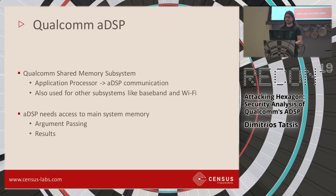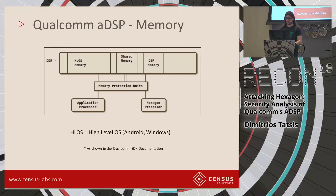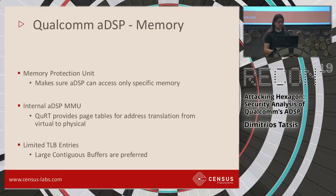The ADSP communicates with the rest of the system with something called the Qualcomm shared memory subsystem, and it's also used for baseband and Wi-Fi communication. The ADSP needs to have access to the main system memory in order to read the passed arguments and write the results back to the user. As shown in a diagram from Qualcomm documentation, the Hexagon processor is able to access the main system memory, but only through a memory protection unit, which limits what memory the ADSP can or cannot access. There's also an MMU managed by the real-time operating system providing translation from virtual addresses to physical addresses.